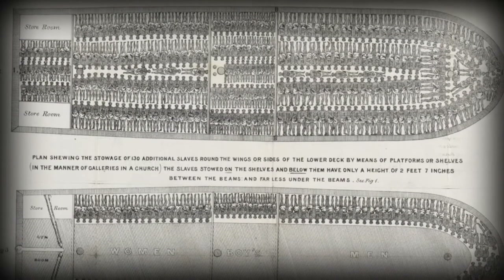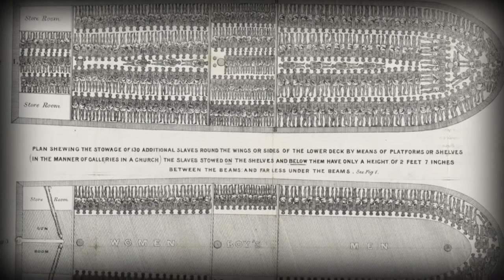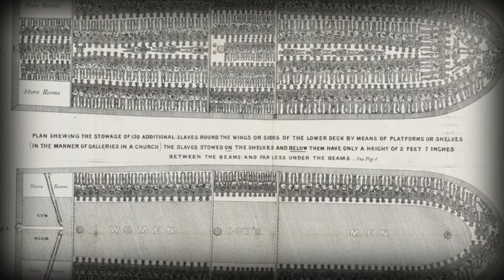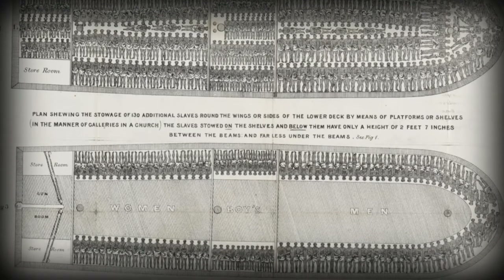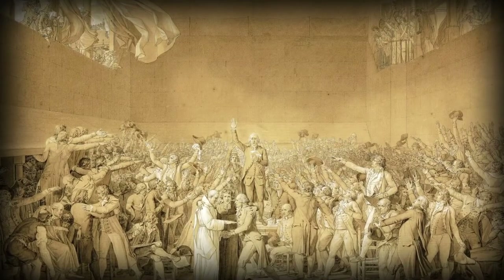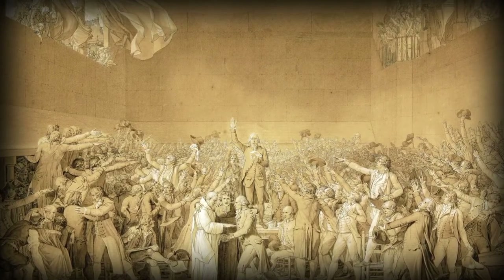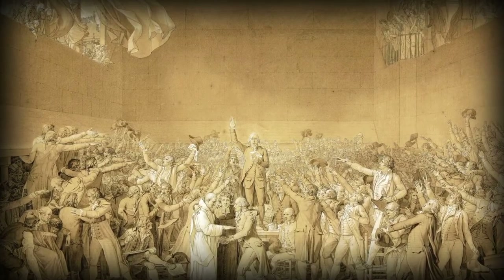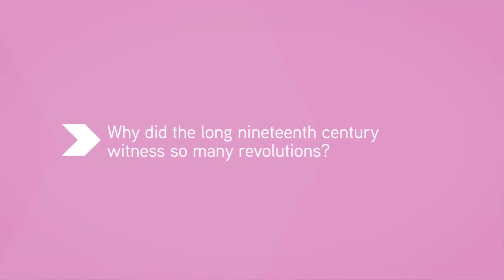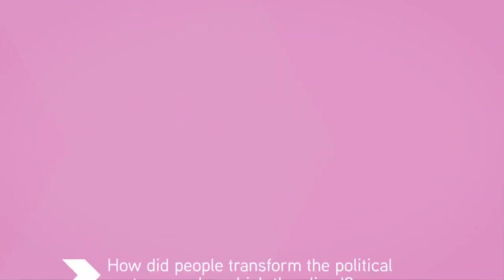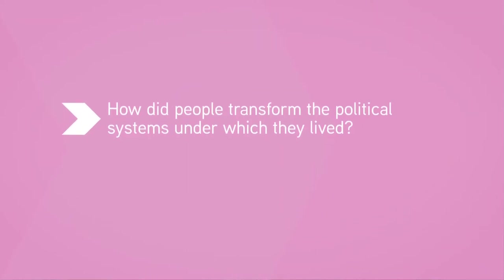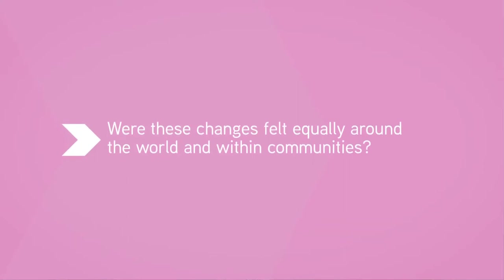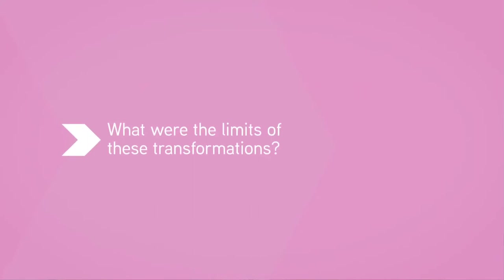Of course, these changes had their limits and they didn't take hold everywhere. In many cases, the new kinds of governments and new ideas about individual sovereignty did not extend to everyone. Nevertheless, they marked a giant transformation in the way the world worked. In this unit, we'll ask: Why did the long 19th century witness so many revolutions? How did people transform the political systems under which they lived? Were these changes felt equally around the world and within communities? What were the limits of these transformations?